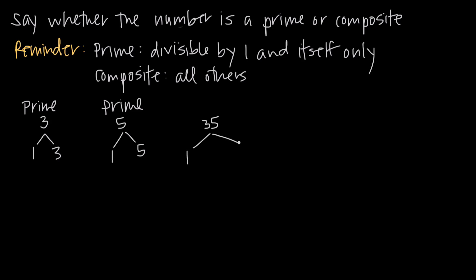What about 35? We know that 1 is going to go in evenly, and we know that 35 is going to go in evenly — that's always going to be the case. But what about any values between 1 and 35? Well, we know that 5 goes into 35 evenly — in fact, it goes in 7 times, which means that both 5 and 7 go into 35 evenly. So because there are factors of 35 other than 1 and 35, we call this a composite number, which means the number has factors other than 1 and itself that divide evenly into it.